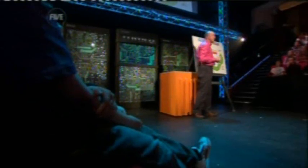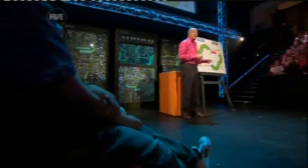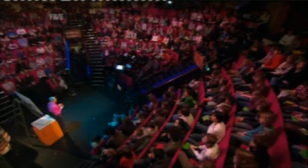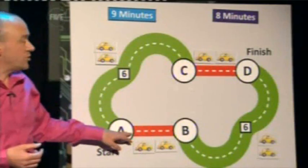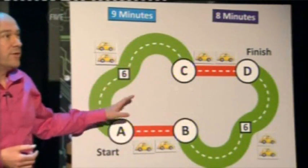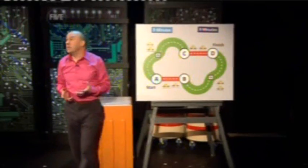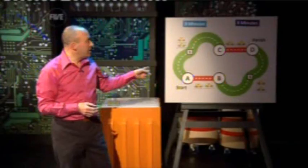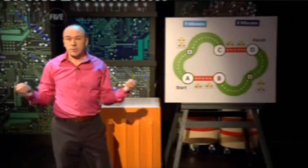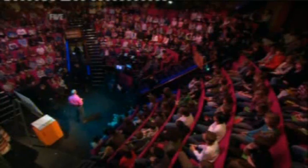This strange effect arises because drivers act selfishly — they ignore any benefit their decisions might have for other drivers. Braess's paradox can actually happen in real life: in Seoul, Korea, when they closed one of the three tunnels through the city, traffic flow actually improved. On the internet, packets of data are like the cars, and the connections between computers are like the roads.